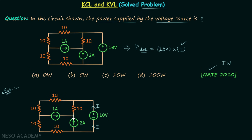1 ampere current is entering the node and 2 ampere current is also entering the node. Let's say the current in this branch is leaving the node. According to KCL, the sum of entering currents equals the sum of leaving currents. So 1 ampere plus 2 ampere equals 3 ampere, and from here we are getting a current of 3 ampere in this branch.